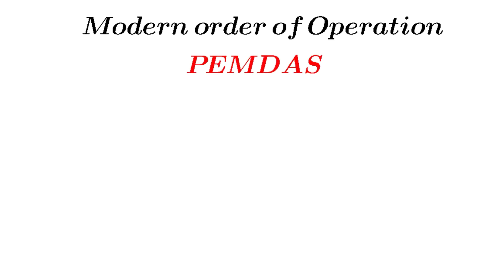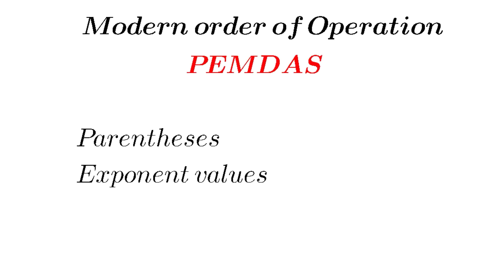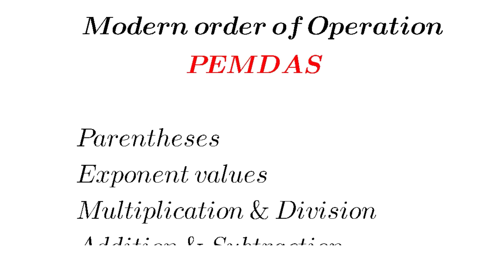According to the modern order of operations — PEMDAS — first do operations inside parentheses, then work on exponent values. After that, multiplication and division from left to right. Finally, addition and subtraction from left to right.